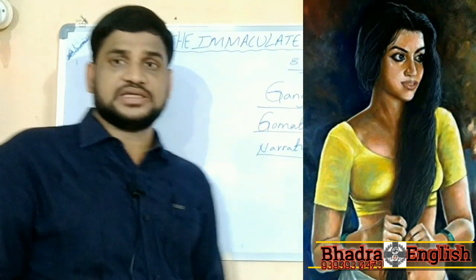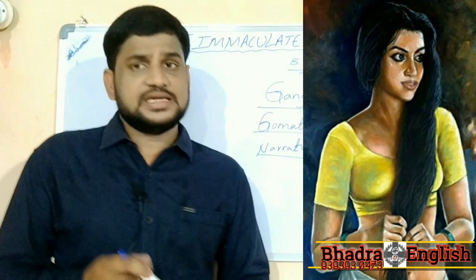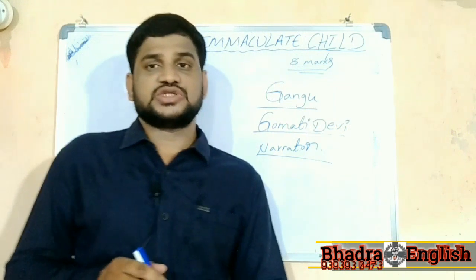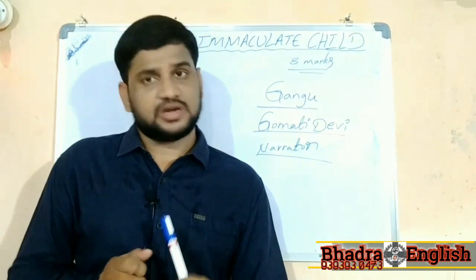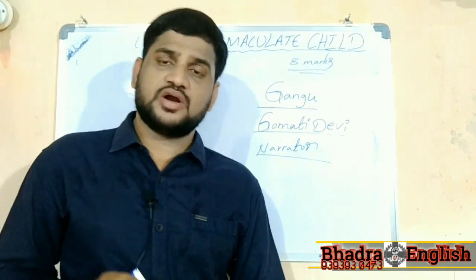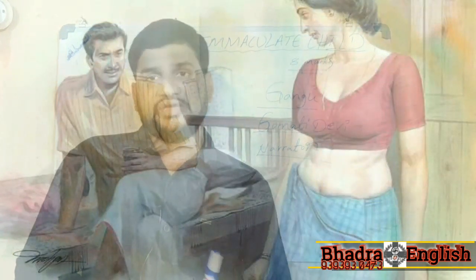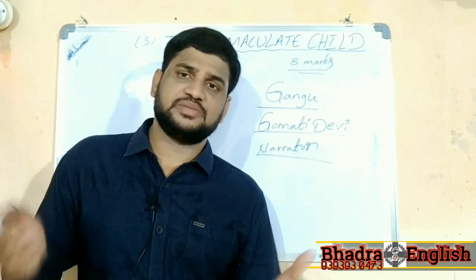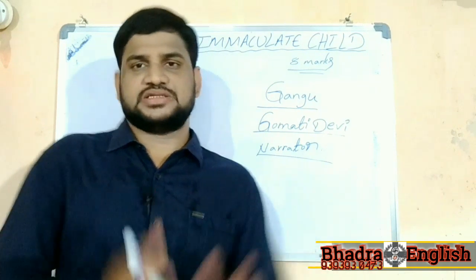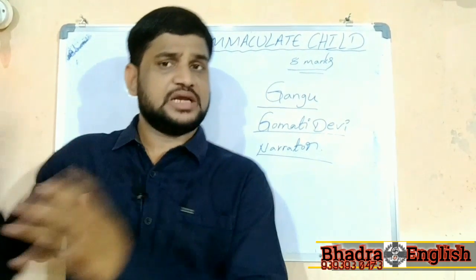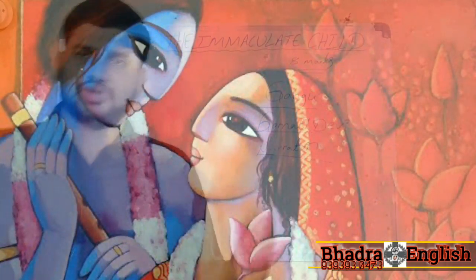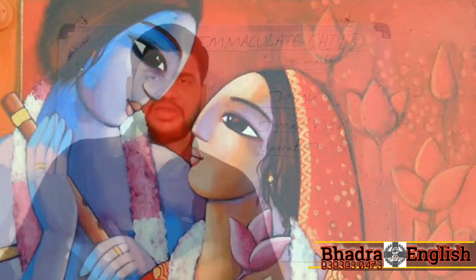The Narrator tried to convince Gangu not to marry Gomati Devi because she had already been married three times. But Gangu didn't listen to his master because he loved Gomati Devi deeply. So Gangu left his master's place, resigned from his job, and married Gomati Devi.